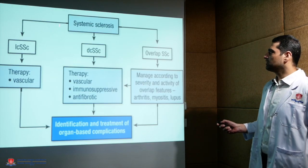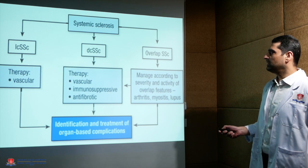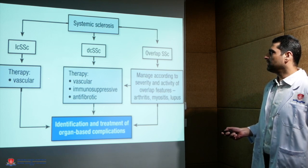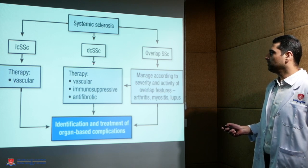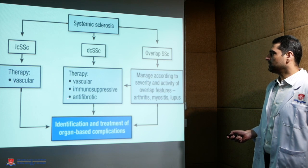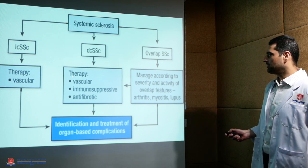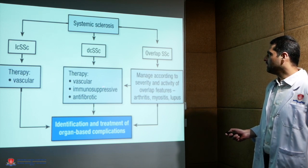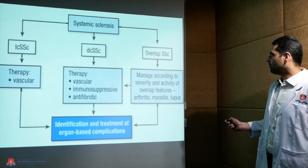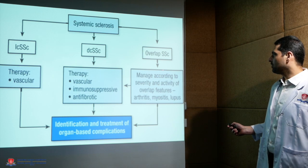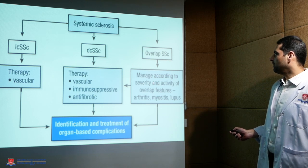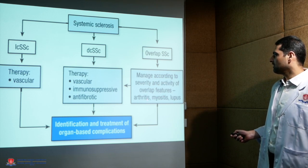If a patient with systemic sclerosis has the limited variant, therapy is mainly directed toward the vascular component. In the diffuse variant, vascular, immunosuppressive, and antifibrotic components must all be targeted. In overlap syndrome, management is according to the severity and activity of features.